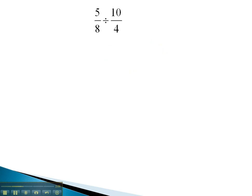This problem is a division problem. Division has one extra step at the beginning, where we have to flip the second fraction and multiply. This makes the problem 5 eighths times 4 over 10.